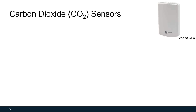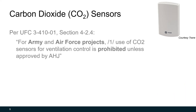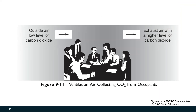The most common DCV sensor is the carbon dioxide sensor. With that said, per UFC guidelines, Army and Air Force projects, the use of carbon dioxide sensors for ventilation control is prohibited unless approved by the authority having jurisdiction. However, especially in the commercial world, we use carbon dioxide sensors a lot for determining occupancy. The idea is pretty simple: we want to bring in outside air with a low level of carbon dioxide and exhaust the air in a building with a higher level of carbon dioxide from what we all breathe out.